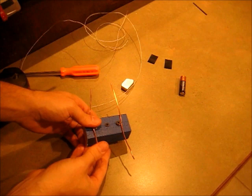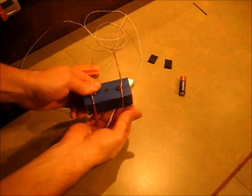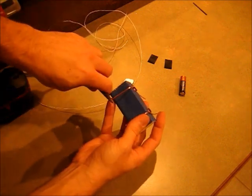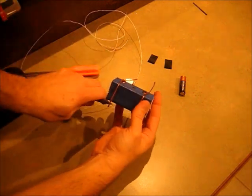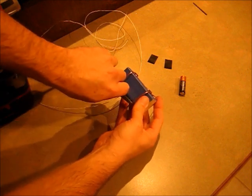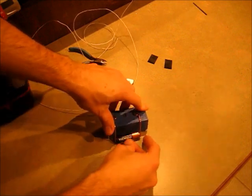Now bend the two front legs down and cut them off just before they pass the end of the block. And your battery is going to go between these two guys.